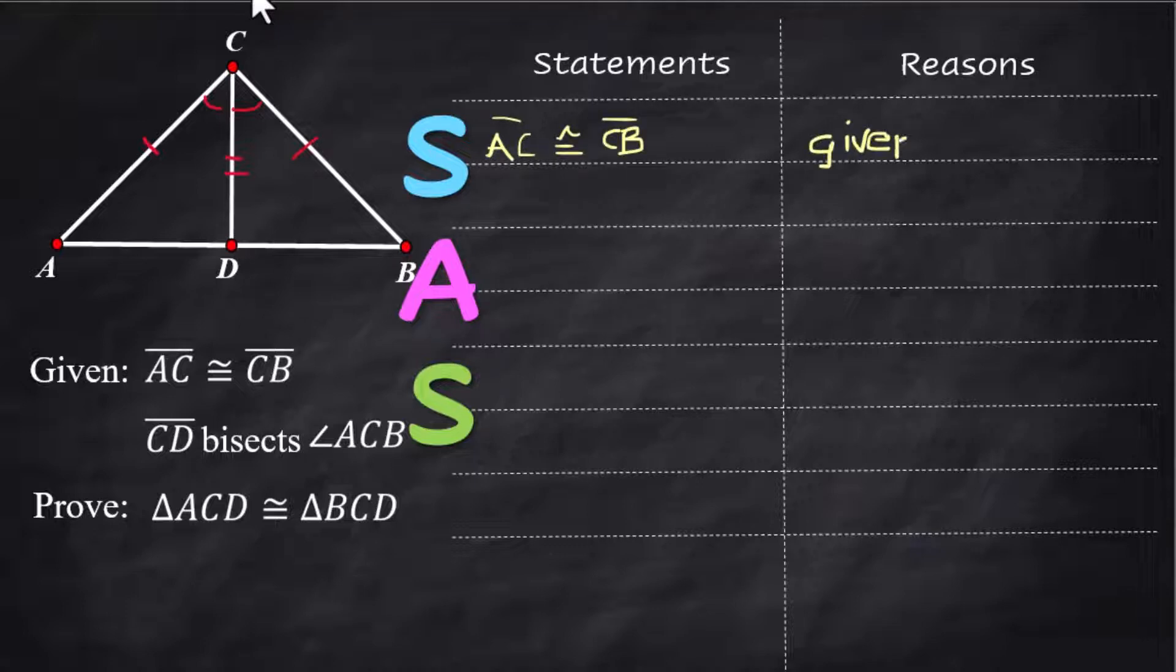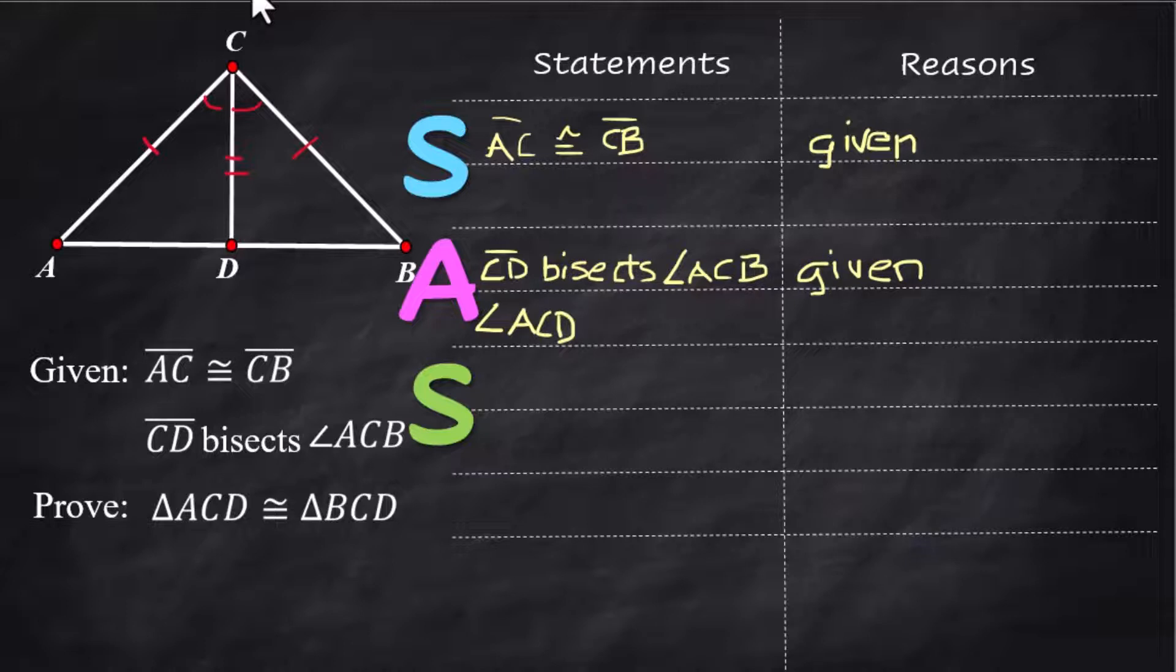Segment CD bisects angle ACB—that's given—and I have to state that. The next line is the one I really need, and that is that angle ACD is congruent to angle BCD, because that is the definition of an angle bisector. But I had to have put that line above first so that I could conclude that those two angles are congruent.